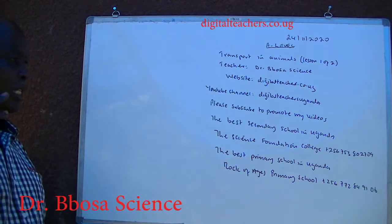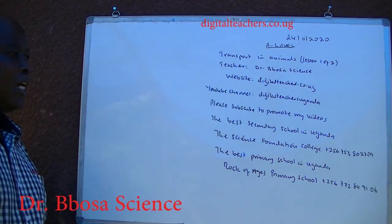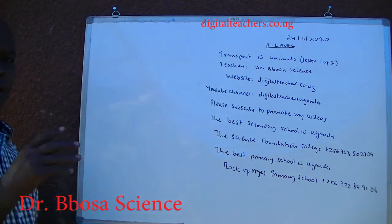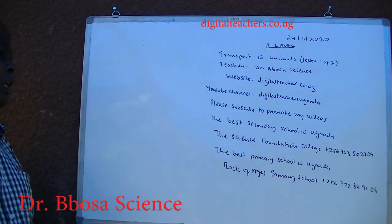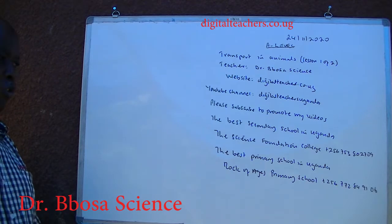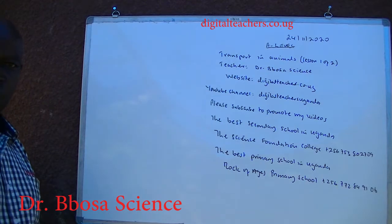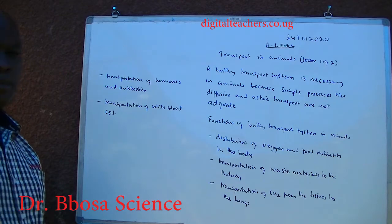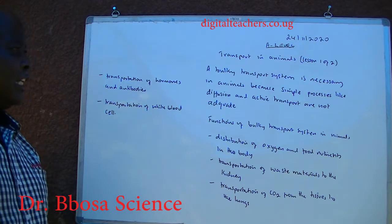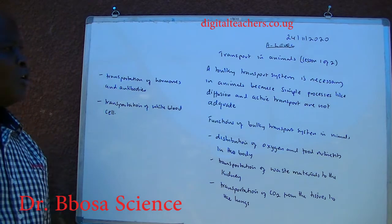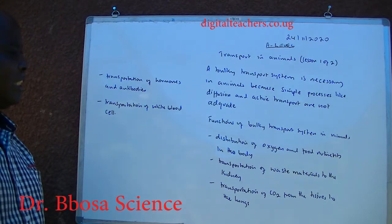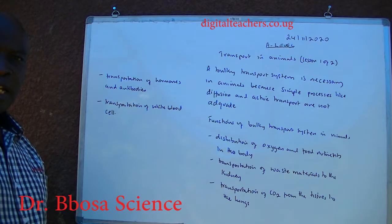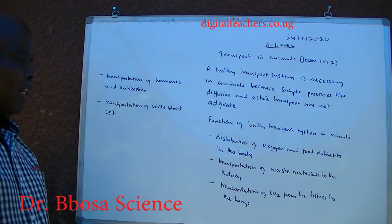The best secondary school in Uganda is the Science Foundation College. The best primary school in Uganda is the Local of Ages Primary School. Baroque transport system is necessary in animals because simple processes like diffusion and active transport are not adequate.